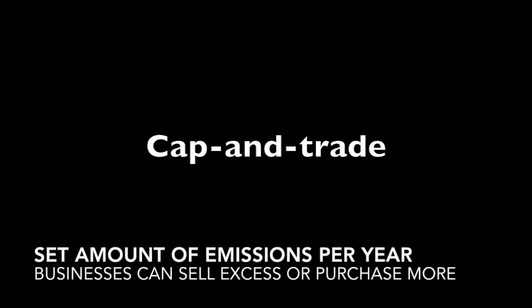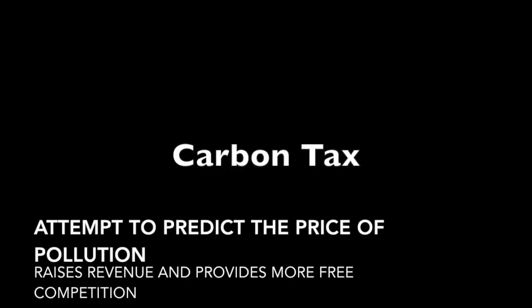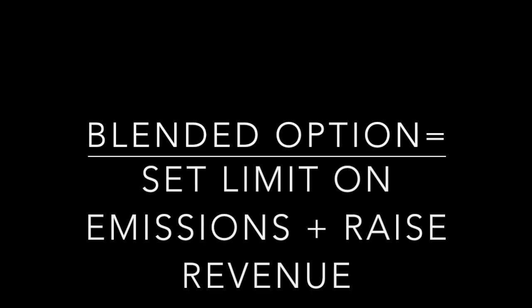A cap-and-trade would set a cap on the amount of emissions for a year, and individuals or organizations can sell excess emission units they do not use or buy emissions from other organizations if they exceed their allowances. A carbon tax would set the price for carbon, though it is difficult to predict the price needed to curb pollution. A blended option could set a fee for emissions past the cap-and-trade limit, with revenue going toward renewable energy research and production — combining the benefits of both approaches.